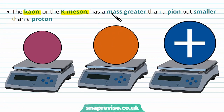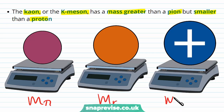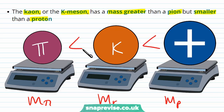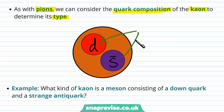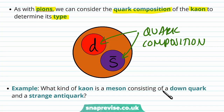The kaon, or K meson, has a mass greater than a pion but smaller than a proton. Comparing the masses of a pion, a kaon, and a proton: the proton has the greatest mass, the pion has the smallest, and the kaon's mass comes somewhere in between.